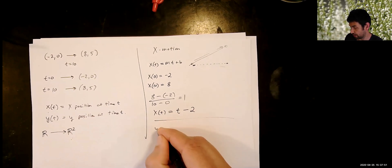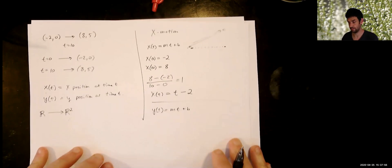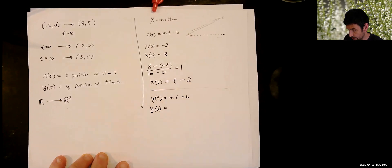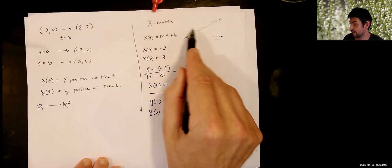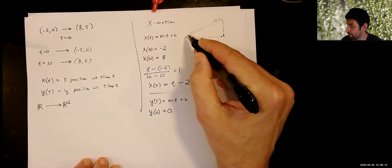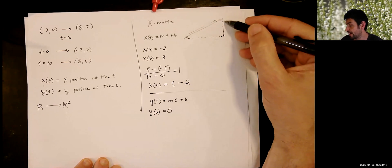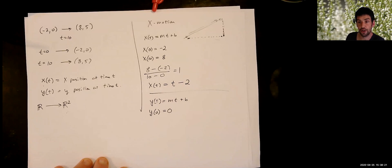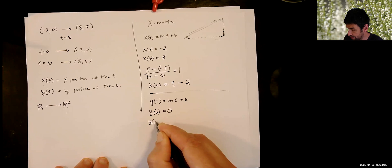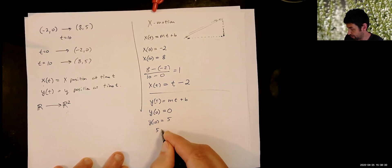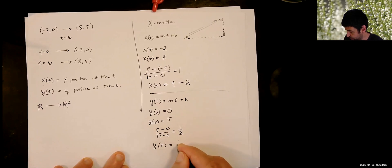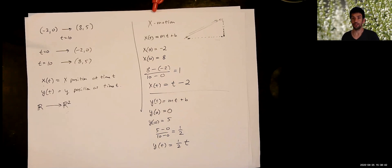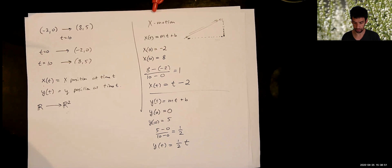Now let's do the same thing for the y coordinate. We want y of t to be a linear expression. Imagine a light from the left, so the particle's shadow on a wall moves upward as the particle travels. We want y of 0 equals 0 and y of 10 equals 5. The slope is (5 minus 0) over (10 minus 0), which is one-half, and the intercept is 0, so y of t equals one-half t. We now have expressions for the x and y motion of the particle.